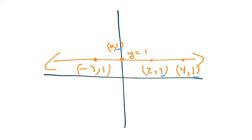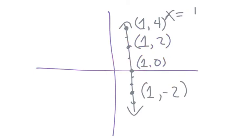So when it's a y equals graph, we know that when it's y equals, that we have a horizontal line. Whereas if it's x equals, we have a vertical line.